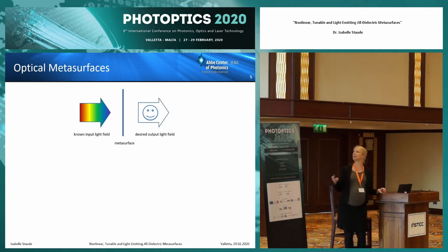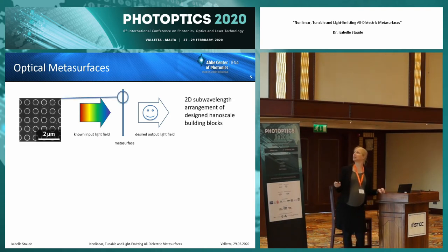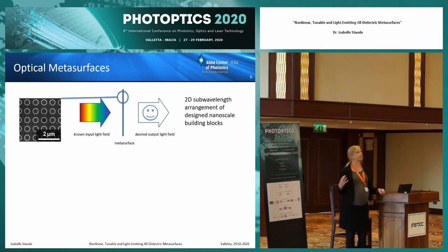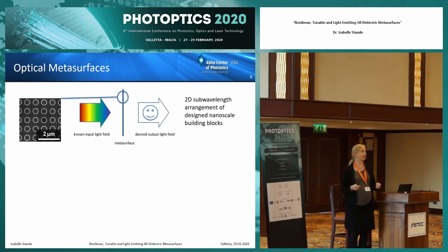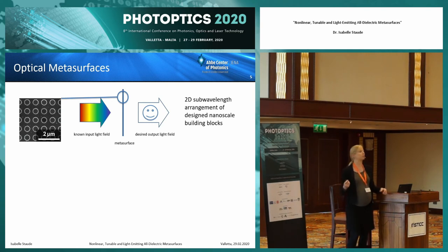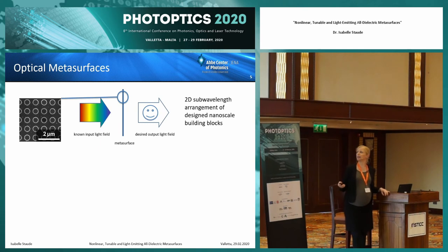How does this metasurface do this? The magic is really in the structure. This metasurface is a two-dimensional sub-wavelength arrangement of designed nanoscale building blocks. By designing these blocks and their interaction with light, the metasurface is able to impose many different functionalities onto the incident light field.